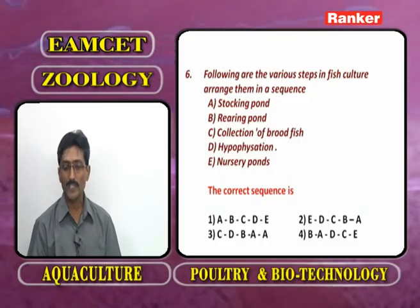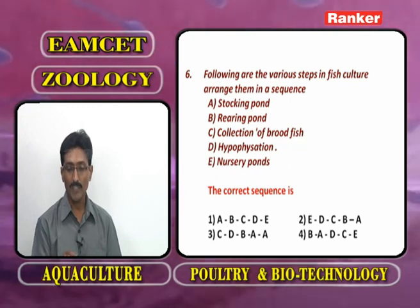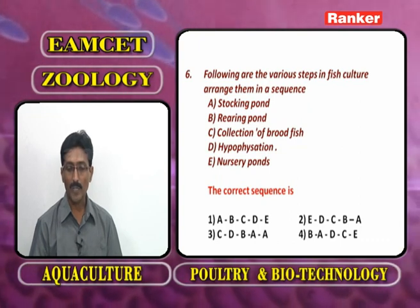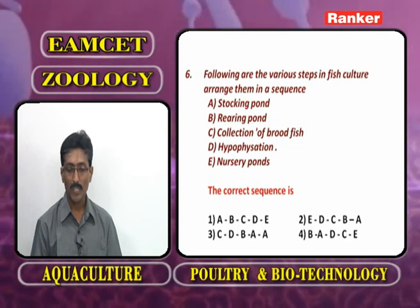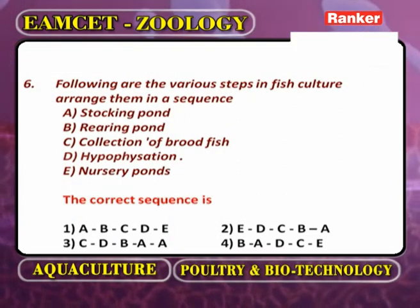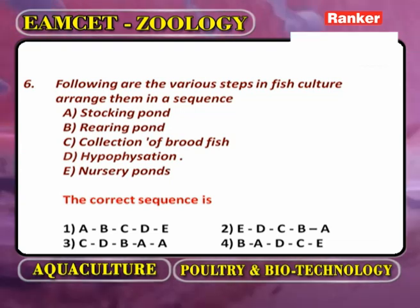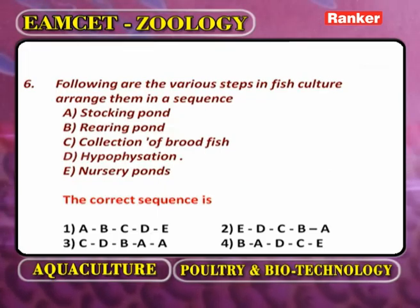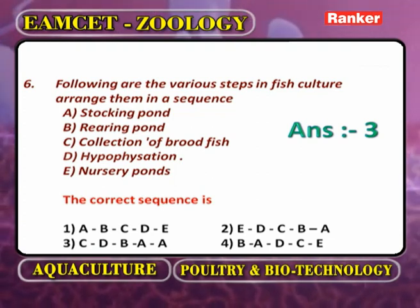The correct sequence for fish culture steps is: collection of brood fish → hypophysation → nursery pond → rearing pond → stocking pond. The answer is the third option.